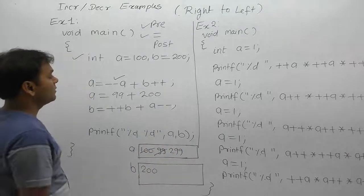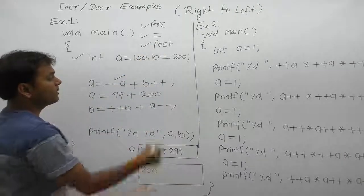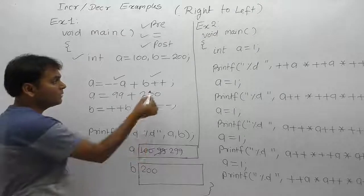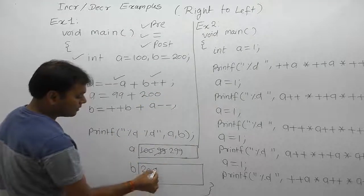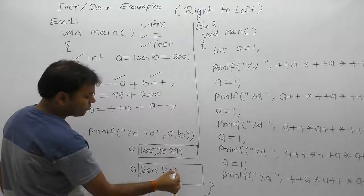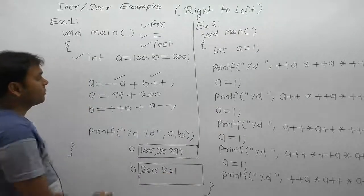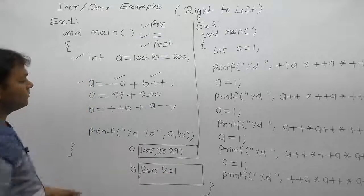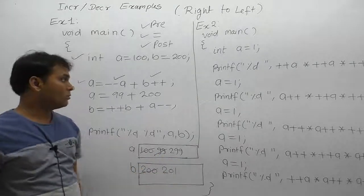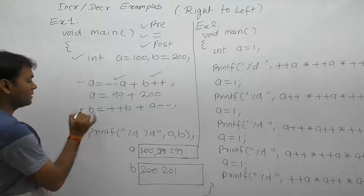After that, the post operation — post-increment — is performed only one time. b becomes 201. After solving the first expression, value of a is 299 and value of b is 201.